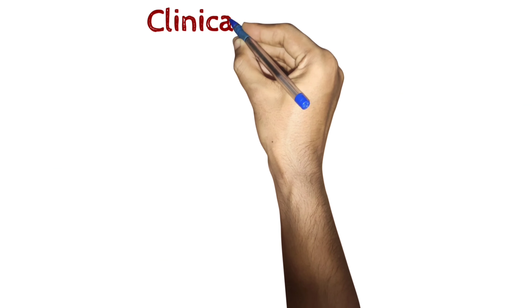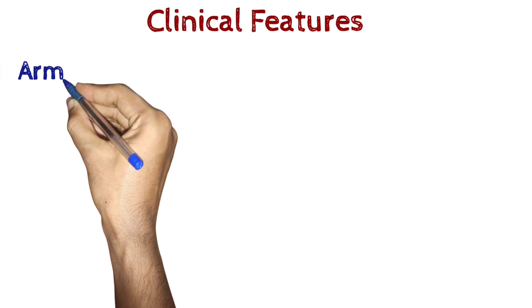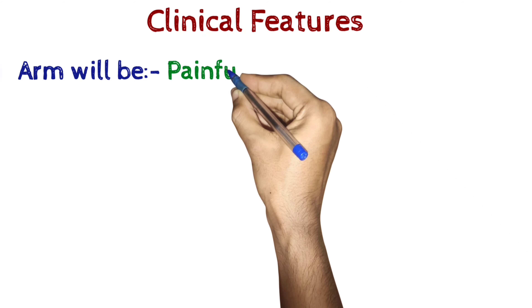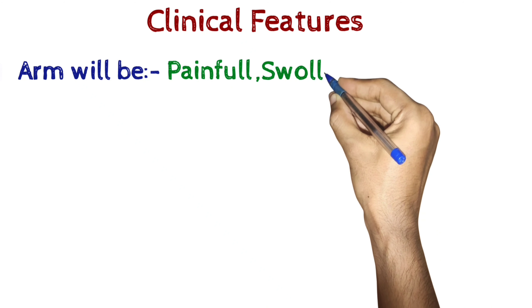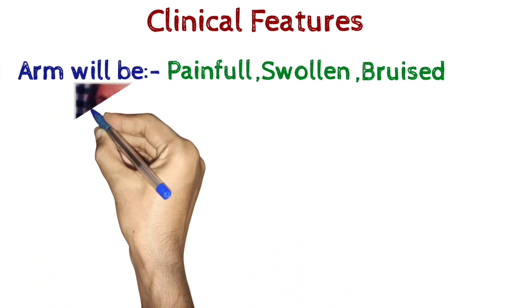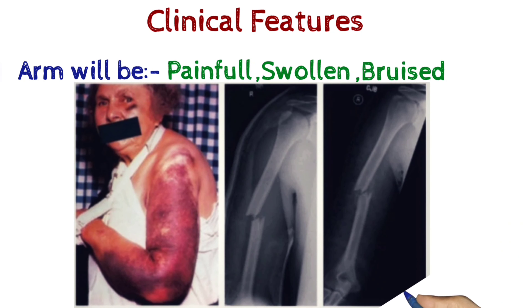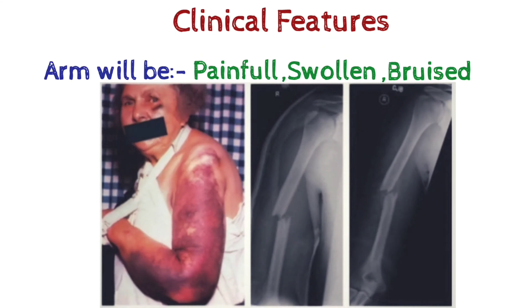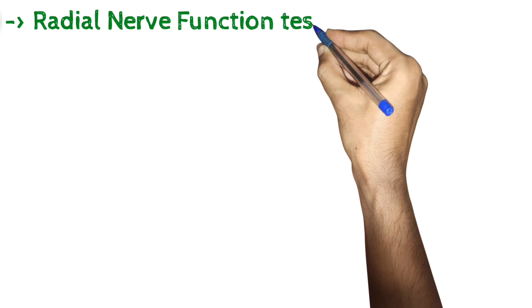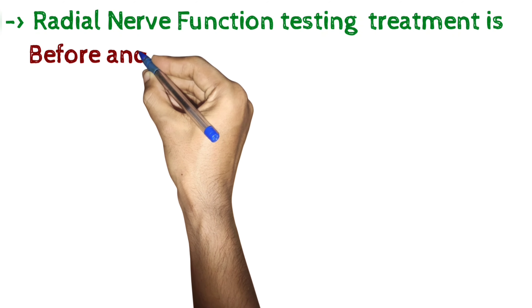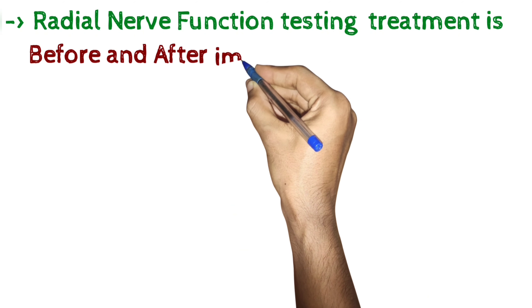Clinical Features: The arm will be painful, swollen, and bruised. Testing of radial nerve function before and after treatment is important.